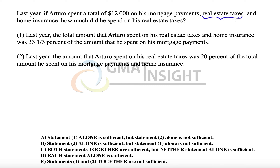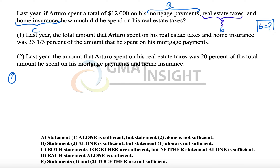This is the portion that we have to find out. Let's check the first statement. Let's call the mortgage payment A, real estate taxes B, and home insurance C. That means we need to find out the value of B.